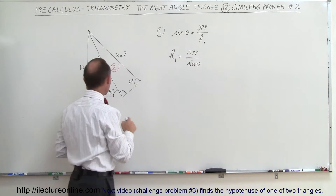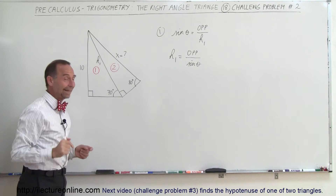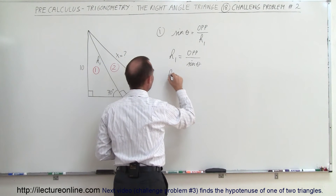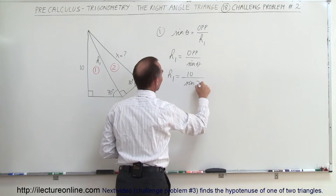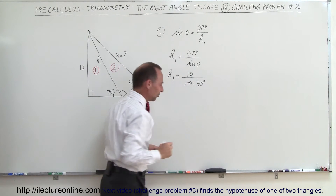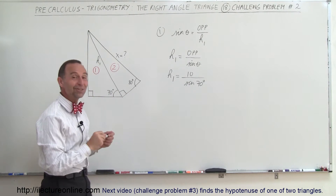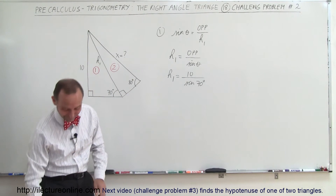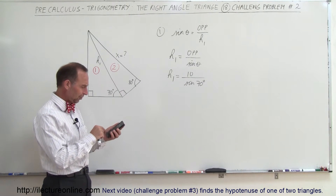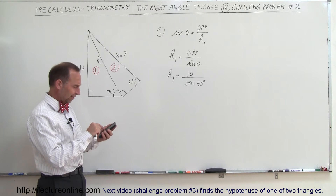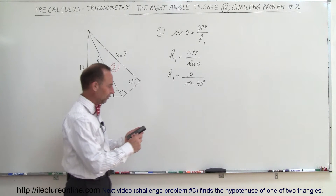In this case, theta is the 70-degree angle and the opposite side is equal to 10. So h sub one is equal to 10 divided by the sine of 70 degrees. Let me grab my calculator — 10 divided by the sine of 70 — and that's 10.64.